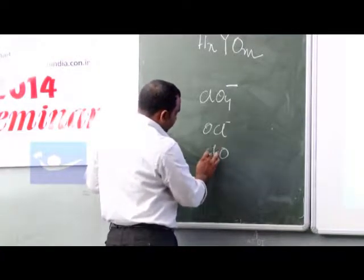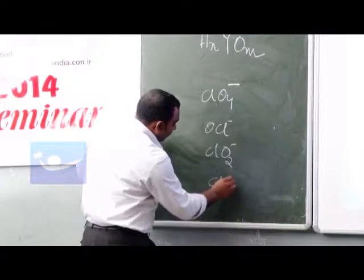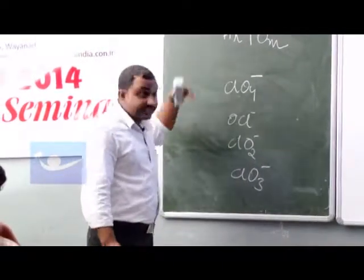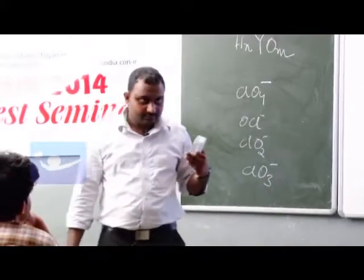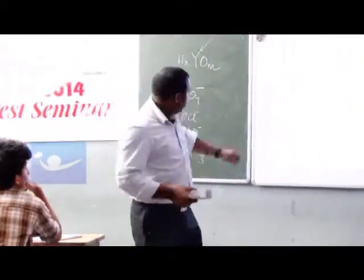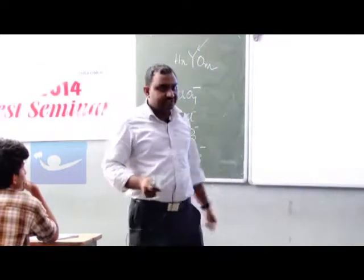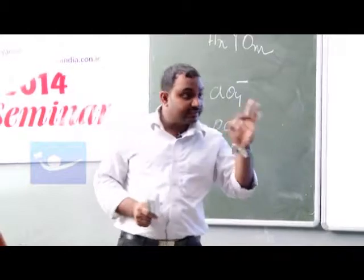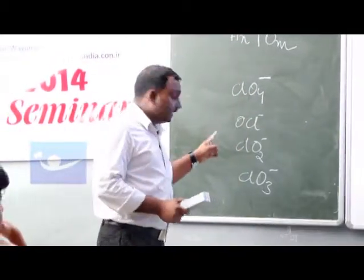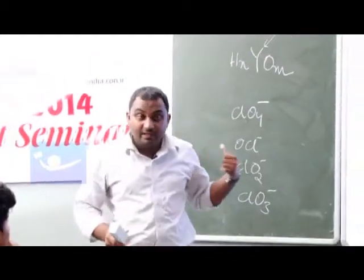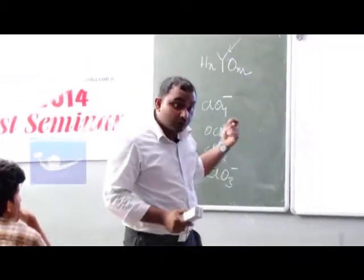Then ClO₃⁻. After releasing the proton, an acid will release a proton. So if you take these four species, the easy way to understand which is the strongest acid: look at the oxidation number of that Y, which is the Y atom over here - chlorine.